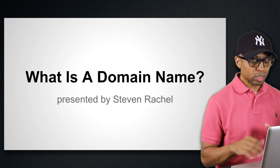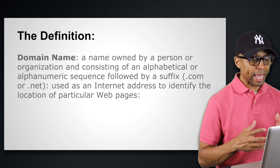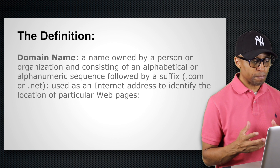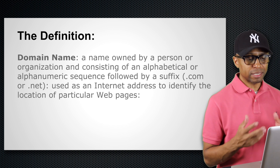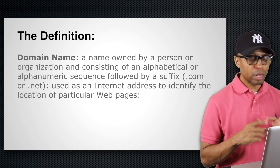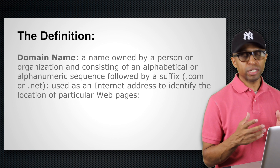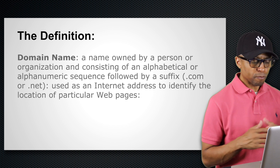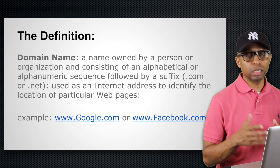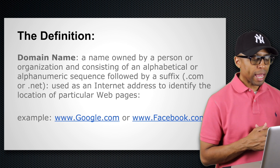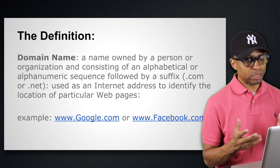So what is a domain name? The definition of a domain name is a name owned by a person or organization, consisting of an alphabetical or alphanumeric sequence followed by a suffix like dot com, dot net, or dot org, used as an internet address to identify the location of a particular website or web page. For example, google.com and facebook.com are domain names we see all over the internet.